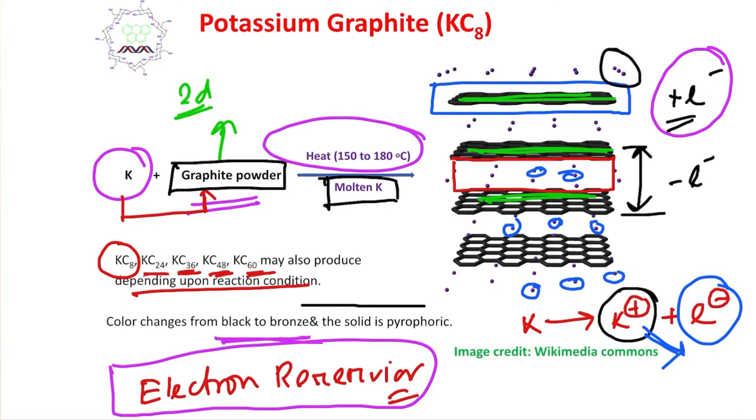Since this graphite contains one additional electron and potassium plus, because of this excess electron, this potassium graphite solid is pyrophoric, although graphite itself is not pyrophoric. Pyrophoric means it spontaneously catches fire.